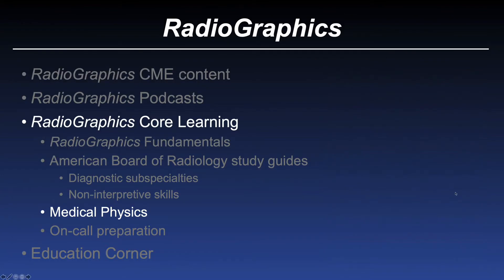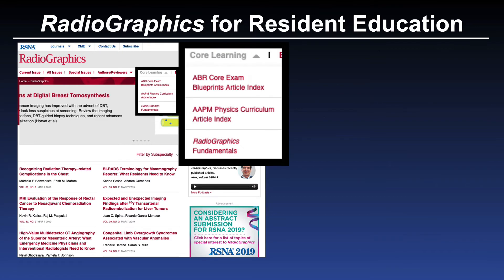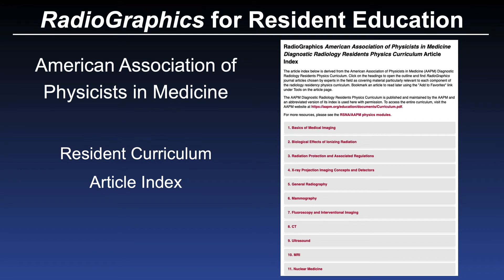In addition, there is a Medical Physics Index, found under the Core Learning tab. We've coordinated with the American Association of Physicists in Medicine to utilize their index to organize all of our physics content in Radiographics according to the index used for the physics curriculum for medical physics residents. Choosing the AAPM physics curriculum article index will bring you to a series of 11 areas of medical physics in which all of our content can be found organized according to this index.